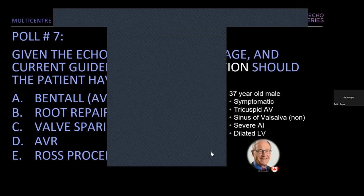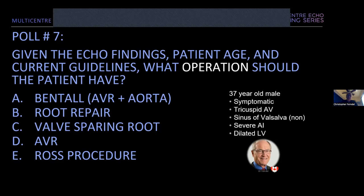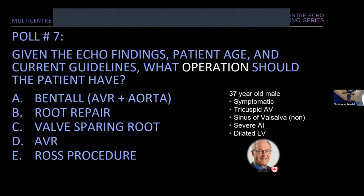Poll results: 56% said valve sparing root replacement, 17% replacement of ascending aorta, 11% Bentall, 11% AVR, and 6% Ross. In fact, the answer here is root repair — a repair of the root, not necessarily full replacement of the ascending aorta. Chris, for a 37-year-old symptomatic male with a tricuspid aortic valve and non-coronary sinus of Valsalva aneurysm with severe AI: the approach would be to repair the area of the aneurysm and leave it at that, without re-implanting coronary arteries — basically a root repair.